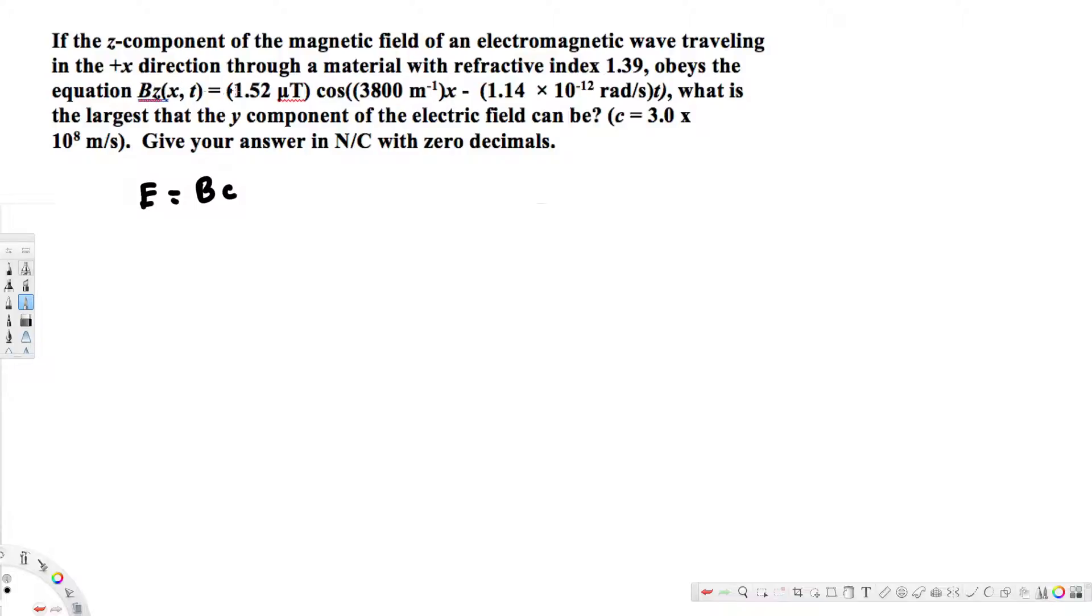Now if this wave goes through vacuum, because for vacuum we know that the index of refraction is one, so when we divide, this is the original equation Bc over n. For vacuum we just neglect this one because that's going to be just one. But when we have different material, here we have a different material because the index of refraction is 1.39, so we have to use Bc over n to calculate this one.